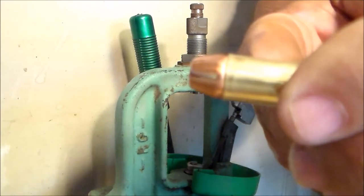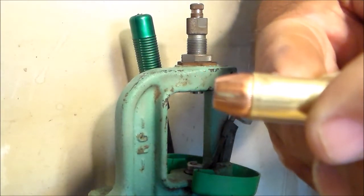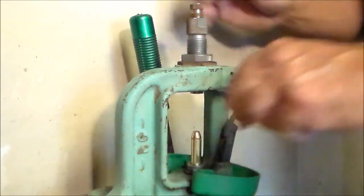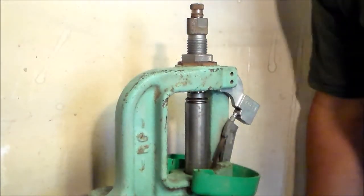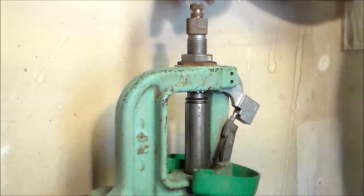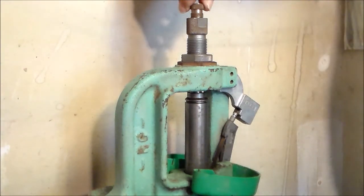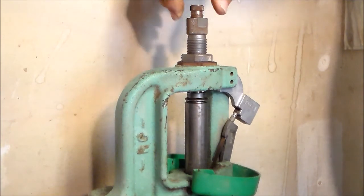I now have the proper crimp on the bullet. So the next thing: put it back into the shell plate, run it all the way up back to where it was crimped, and this seating stem right here, run it down until you hit the top of the bullet.